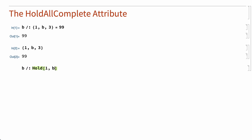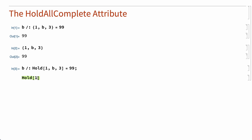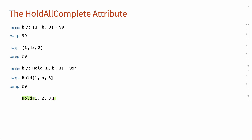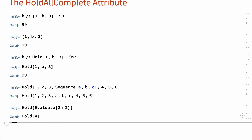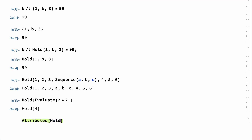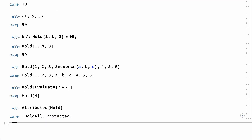For example, an evaluation rule attached to the symbol b for the expression Hold[1, b, 3] does get applied when Hold[1, b, 3] is evaluated. The elements of a sequence expression are spliced into an enclosing Hold, and Evaluate can be used to cause evaluation of elements in Hold even though the enclosing Hold function has the HoldAll attribute. All of these evaluations are prevented by the attribute HoldAllComplete.